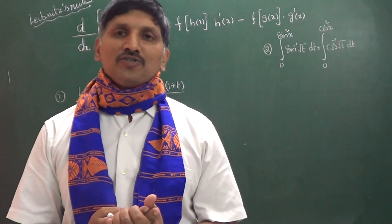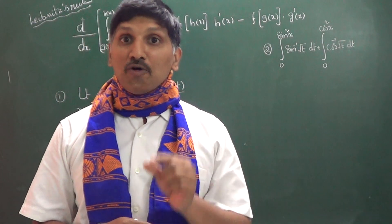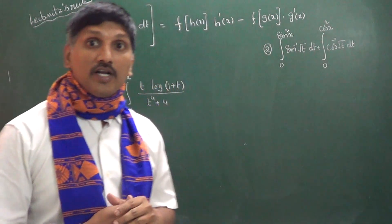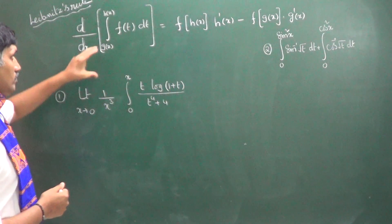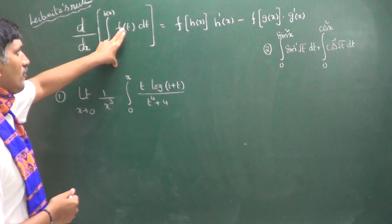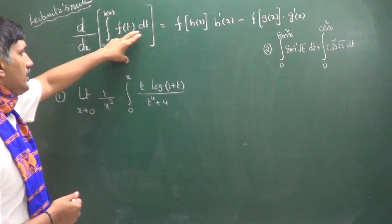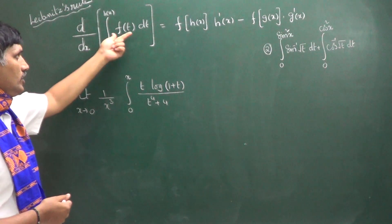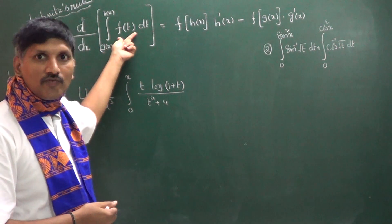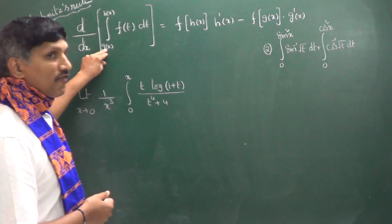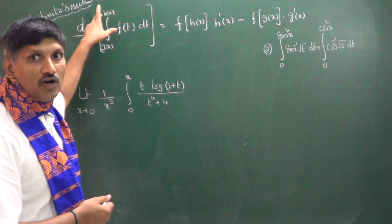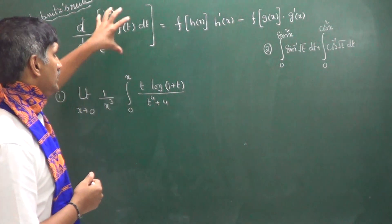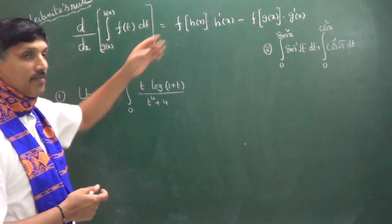Hi dear students. In this class I am going to discuss how to differentiate the definite integral — that is the Leibniz rule. The integral of f(t) dt with limits from g(x) to h(x), where f(t) is a continuous function and g(x) and h(x) are differentiable functions. Then the differentiation with respect to x is given by: